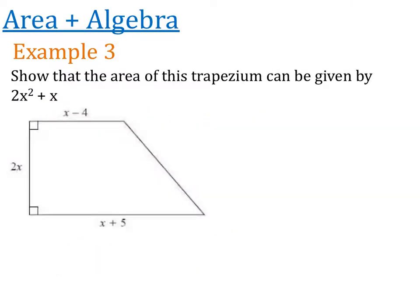Example 3 brings us to some new wording of these questions. So a lot of times the new GCSE questions have something that's called show that questions. Now sometimes people love show that questions because they tell us the answer. And sometimes people just really, really don't like the show that questions. So this question says show that the area of this trapezium can be given by 2x squared plus x.